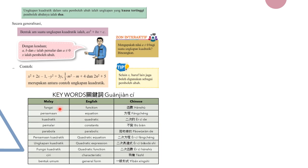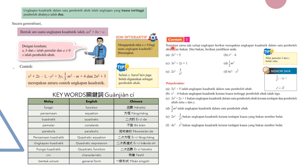Here are some keywords related to this chapter, given in Malay, English, and Chinese. The example question asks: Tentukan sama ada setiap ungkapan berikut merupakan ungkapan kuadratik dalam satu pemboleh ubah atau bukan. Jika bukan, berikan justifikasi anda. In English: determine whether each of the following expressions — A, B, C, D, E, and F — is a quadratic expression in one variable. If not, please justify.